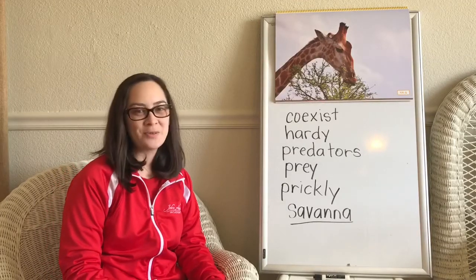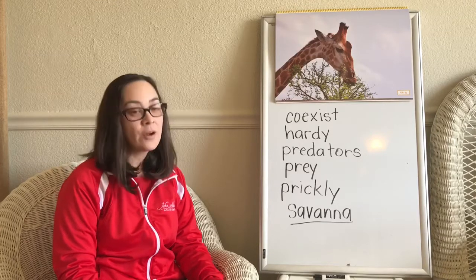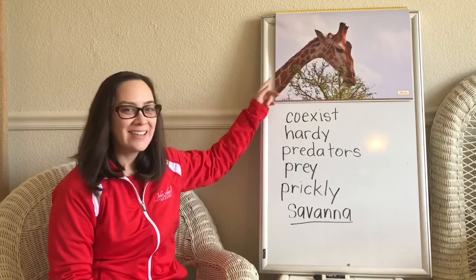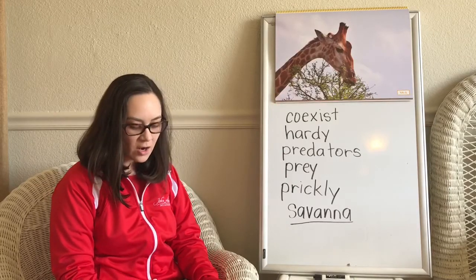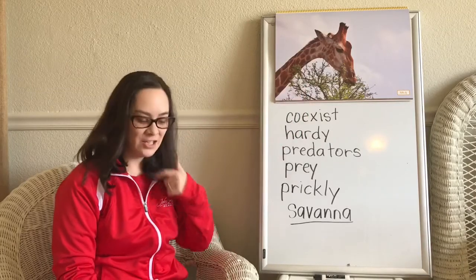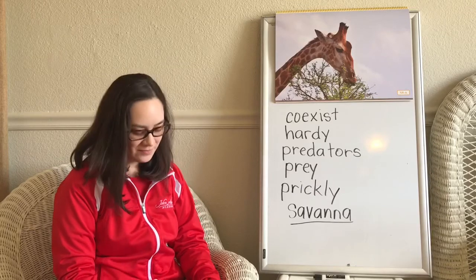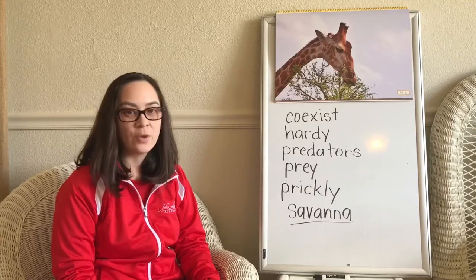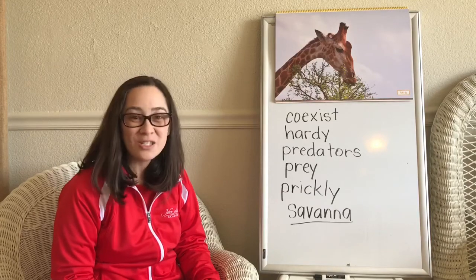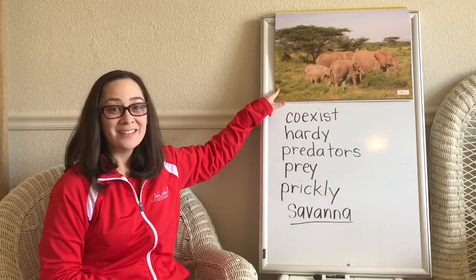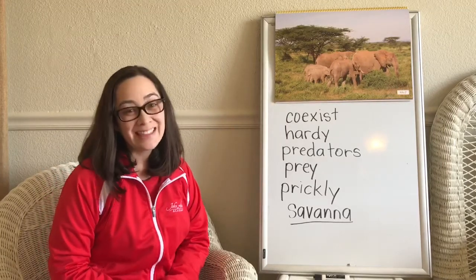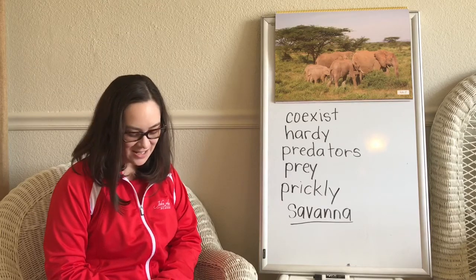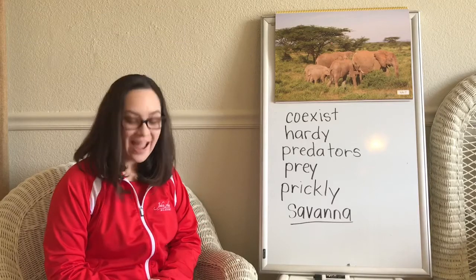Grass is not the only important source of food in the savannah. Many animals get their meals from the acacia tree. Giraffes, with their long necks and tongues, are able to eat twigs and leaves from the top of the acacia. Not only are giraffes' tongues long, they are very tough — it's a good thing too, because the twigs of the acacia tree are covered with sharp thorns that the giraffes eat along with the twigs and leaves. Elephants eat grass and they like acacias too. They rest in the acacia shade and eat the acacia leaves, branches, and seeds. They even like to strip the bark off and chew on it.